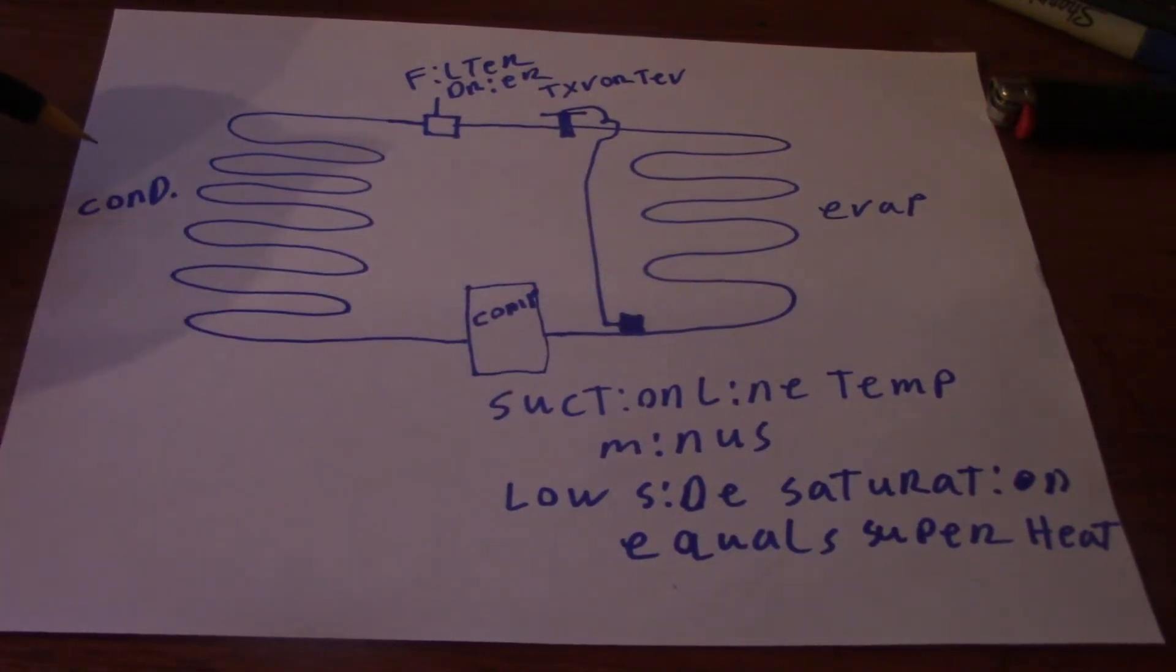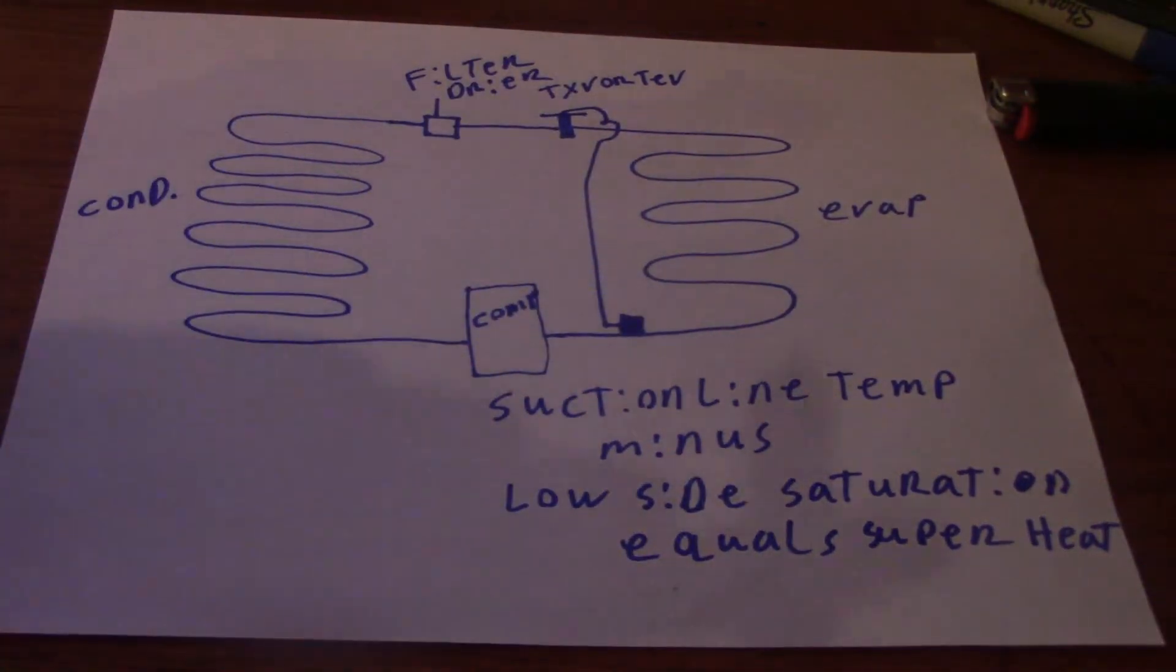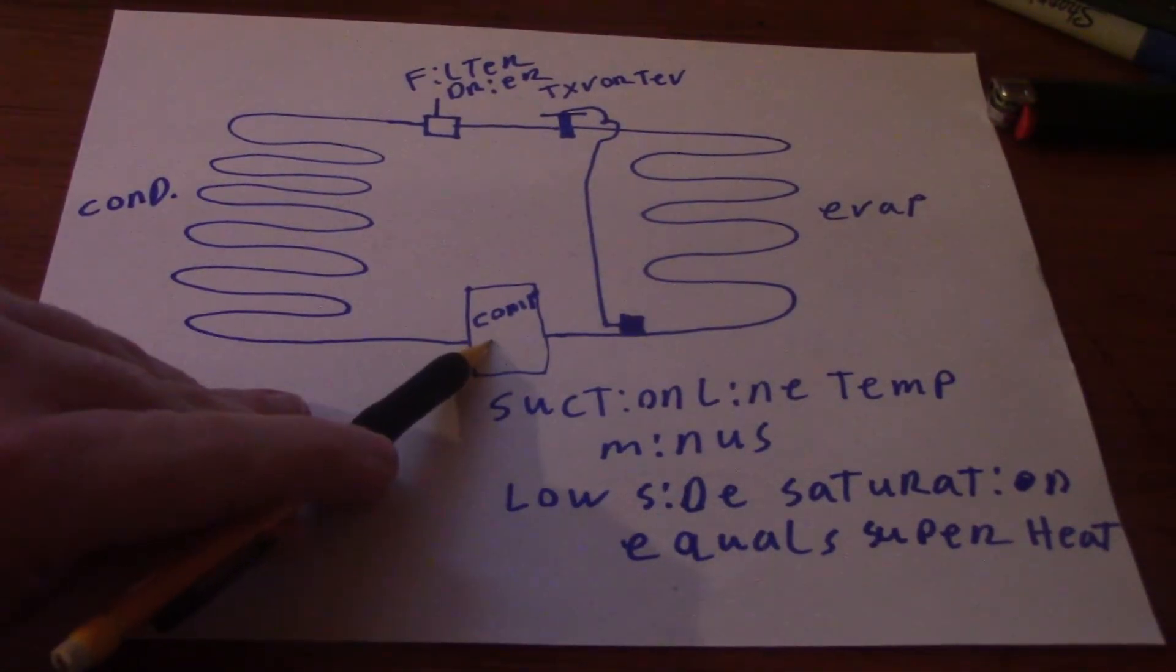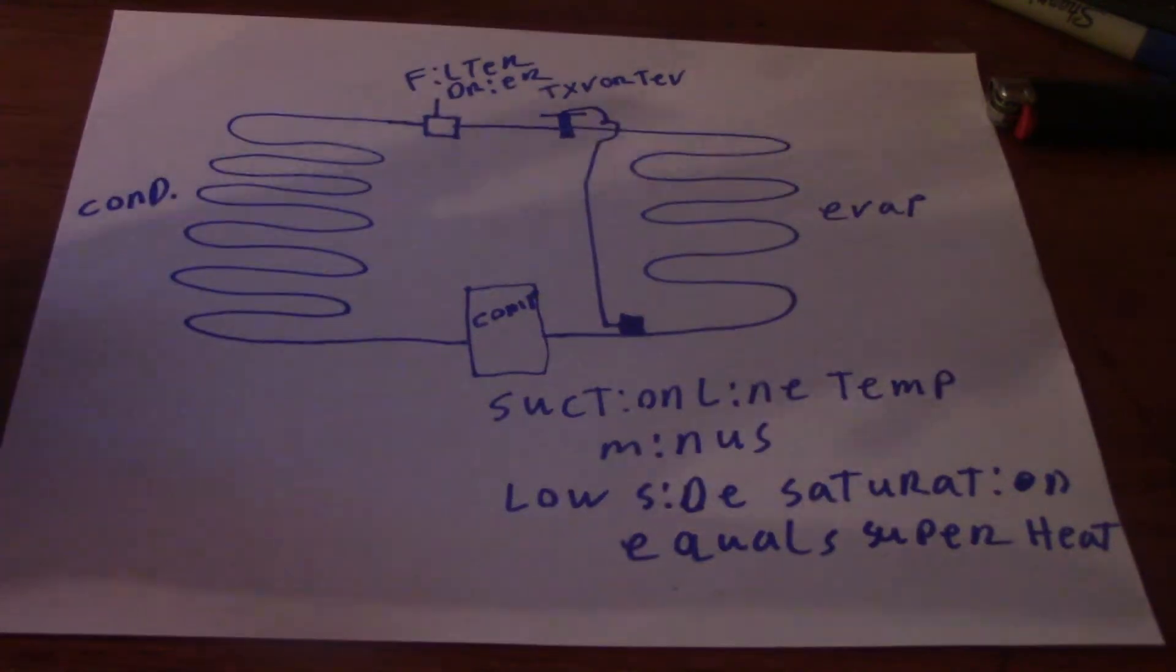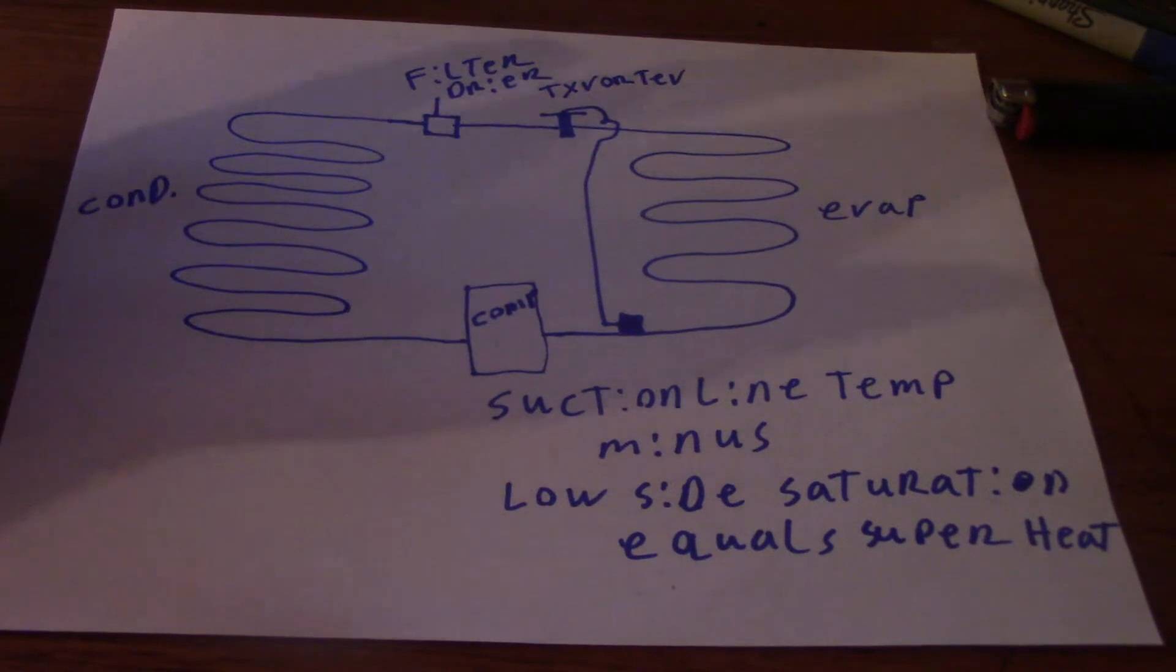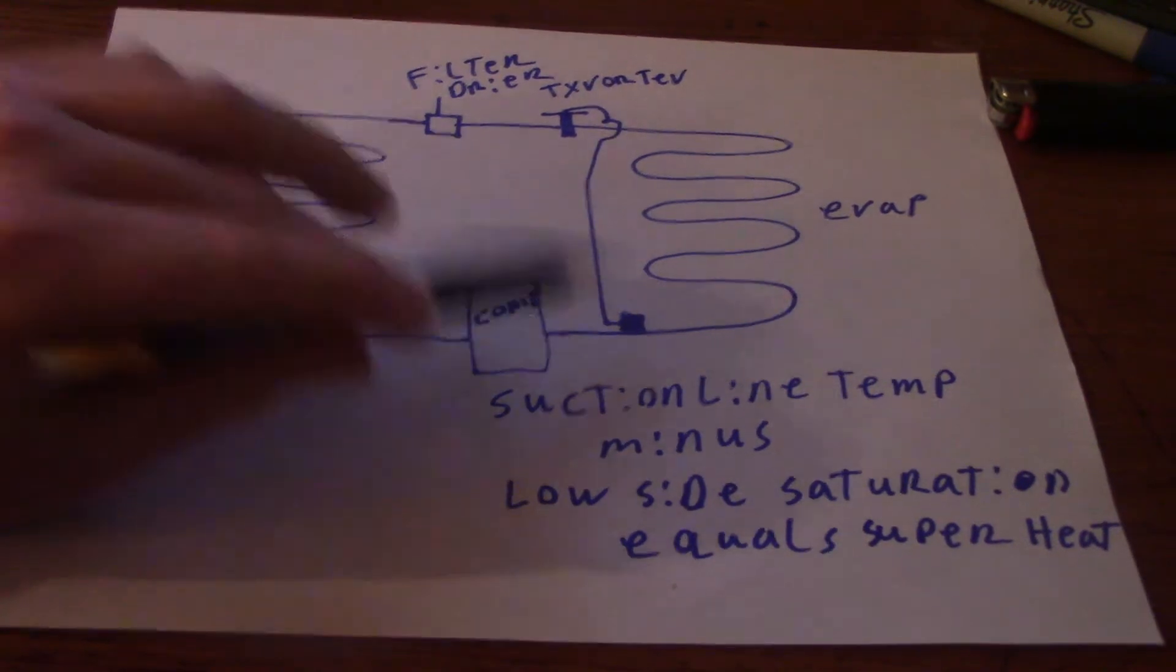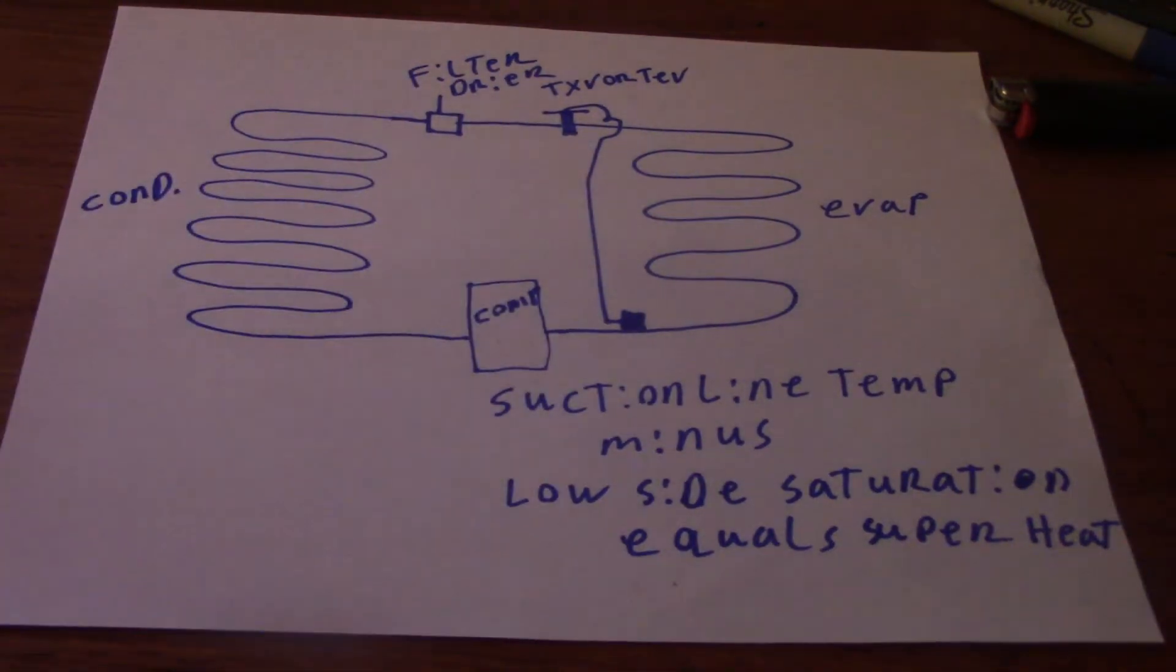We have our high side of the system, which is labeled there with cond, which would be the condenser. Evap is on the low side of the system. Your compressor is the heart of it. I drew this out very basic, where you have a filter dryer and a TXV or TEV depending if it's Parker or Sporland. Your filter dryer is always before the TXV. Sensing bulb goes on the suction line and the outlet of the evaporator.